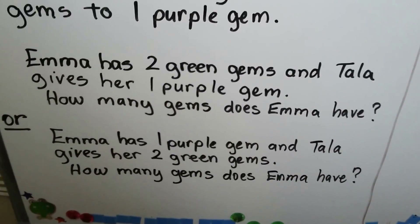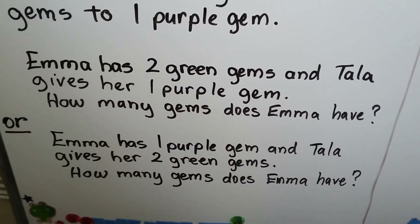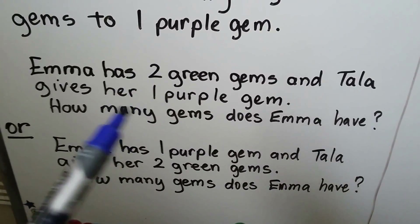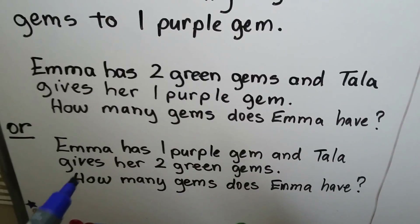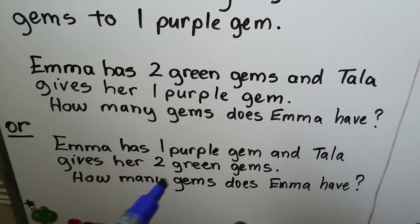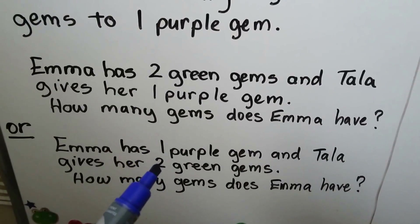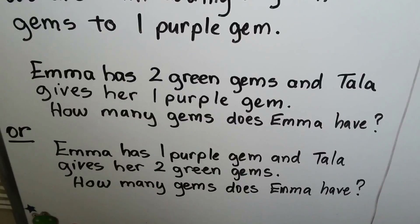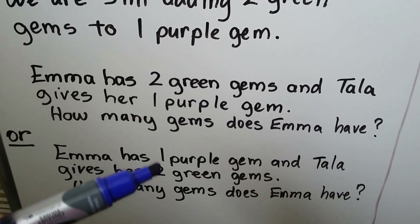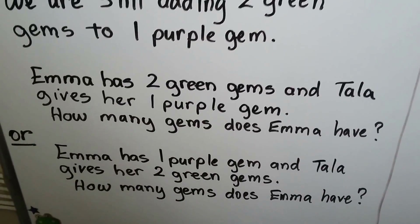Emma has two green gems and Tala gives her one purple gem. How many gems does Emma have? Two and one more — she has three gems. Or, if Emma has one purple gem and Tala gives her two green gems, how many gems does Emma have? One plus two — she still has three. So it doesn't matter what order we add our addends. The sum will be the same.